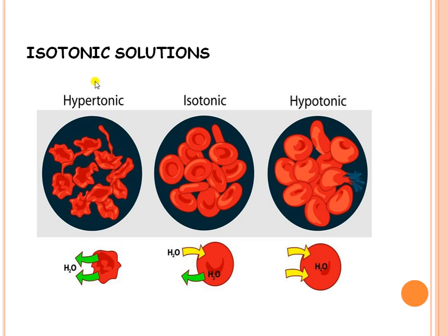There are three types of tonic solutions: hypertonic, isotonic, and hypotonic. Isotonic means the tonicity of the solution is the same as that of body fluid. It has the same osmotic pressure as that of cell contents. Since osmotic pressure of the solution and the cell are the same, there is no gain or loss of water — the cell remains intact. Examples of isotonic solutions: 0.9% sodium chloride, 5% dextrose, and 2% boric acid.